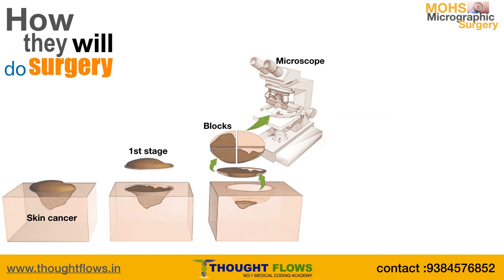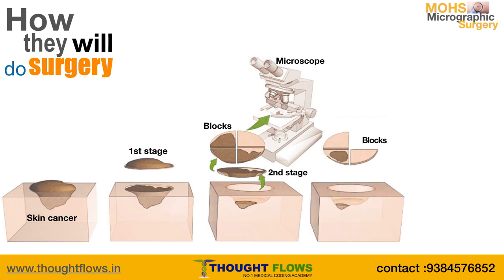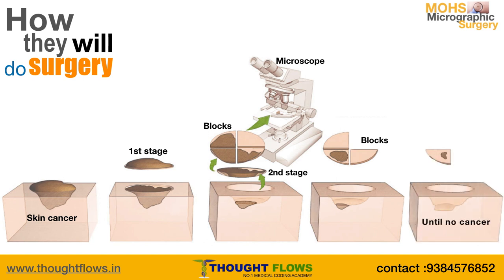If the report comes back positive for cancer, they will go for one more stage of skin removal, and again divide it into blocks. This procedure is repeated until no cancerous cells are identified. In this surgery, we check how many stages were removed, how many blocks each stage was divided into, and which stain was used.